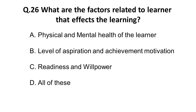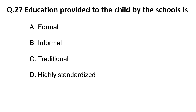The twenty-sixth question: what are the factors related to the learner that affect learning? Options: A) physical and mental health of the learner — obviously one factor; level of aspiration and achievement motivation — also an option; readiness and willpower — all of these are factors which affect learning. So the correct answer is all of these.